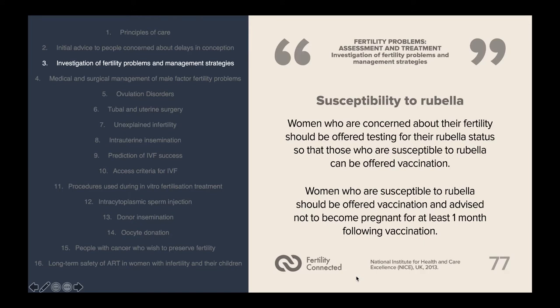Rubella is another disease that can interfere with fertility. Women who are concerned about their fertility should be offered testing for their rubella status. Those who are susceptible to rubella can be offered vaccination, and after vaccination patients should be advised not to become pregnant for at least one month following vaccination.